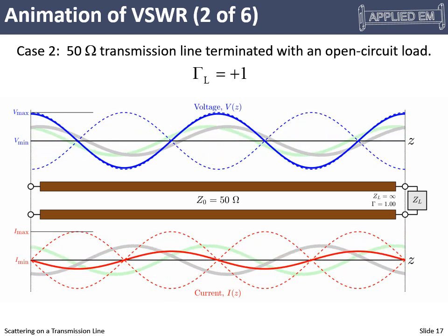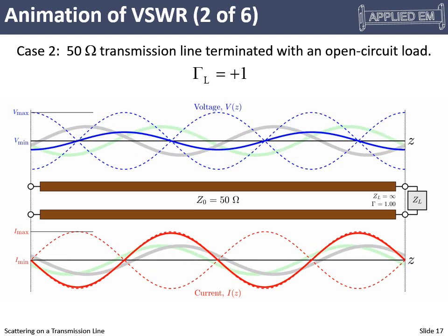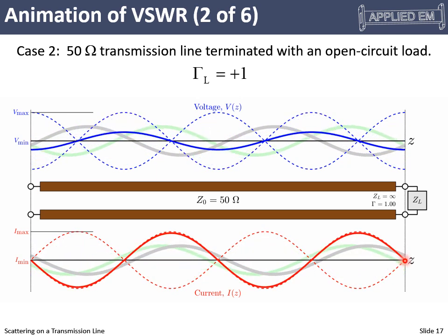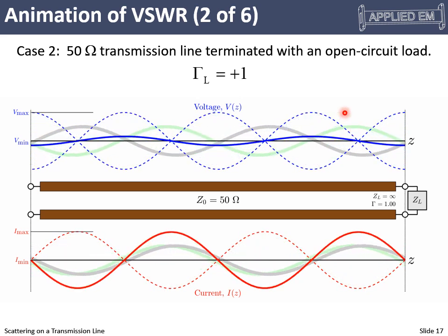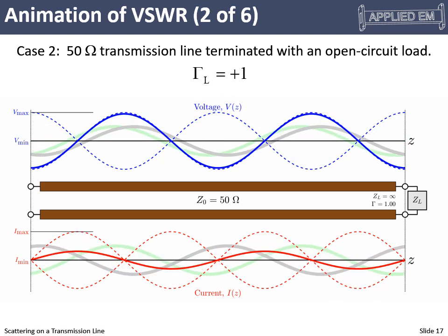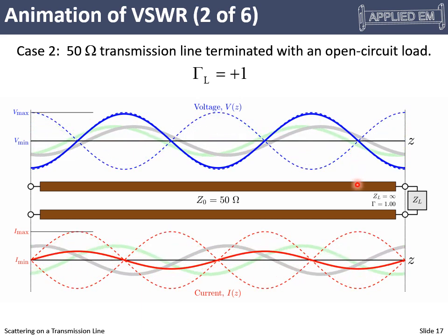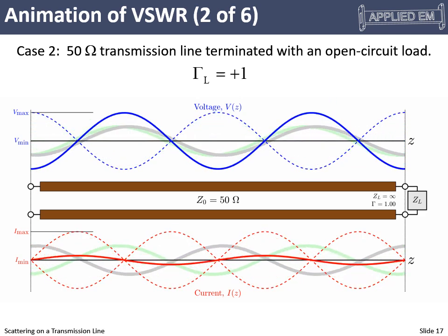Now let's look at the case of an open circuit termination — infinite impedance, reflection coefficient of positive one. Since it's an open circuit, voltage can exist there, and we see it swinging to its maximum at the end. Current, however, is forced to zero. Backing up a quarter wavelength, the current fluctuates to its maximum while the voltage is zero. All of this repeats every half wavelength. Where the voltage standing wave is minimum, the current standing wave is maximum, and vice versa — they are always opposite in that regard.